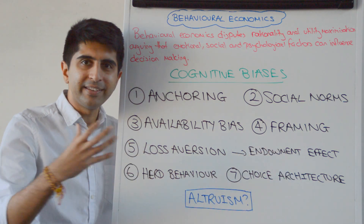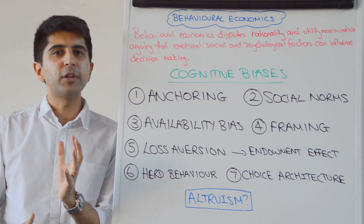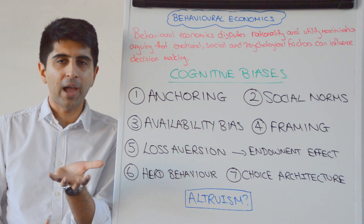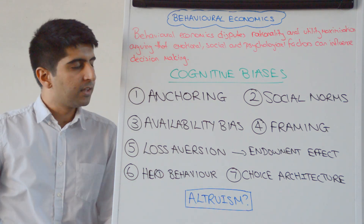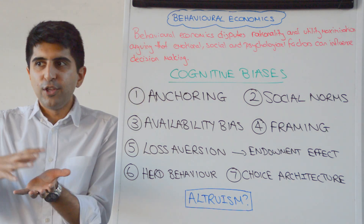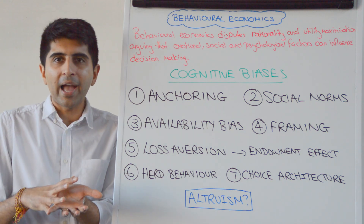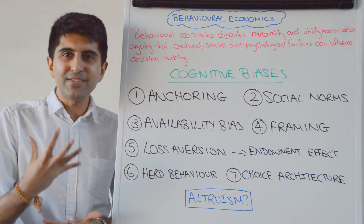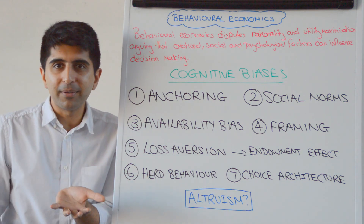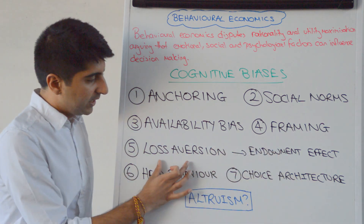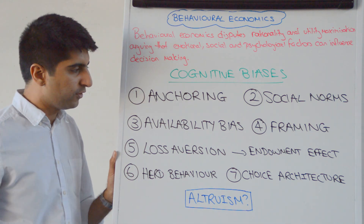And that leads to something called the endowment effect, very much linked. The endowment effect is attaching too much monetary value to something you have compared to something else you could gain. Even if whatever you could gain is worth the same as what you have with no risk whatsoever, you're less willing to engage in that transaction because you value what you have so much. You don't want to give it up. That's the endowment effect, linked very much to loss aversion — we don't like the idea of losing something.